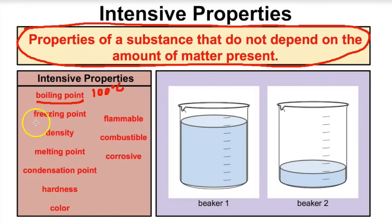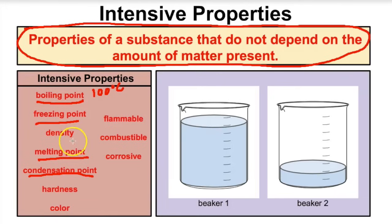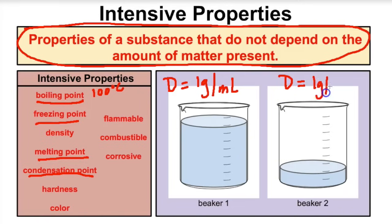Boiling point, freezing point, melting point, and condensation point are all examples of intensive properties — properties that do not depend on the amount of matter present. Similarly, density is an intensive property. The density of water in beaker 1 is 1 gram per milliliter, and the density of water in beaker 2 is also 1 gram per milliliter. It doesn't matter how much water you have — density is always 1 gram per milliliter.